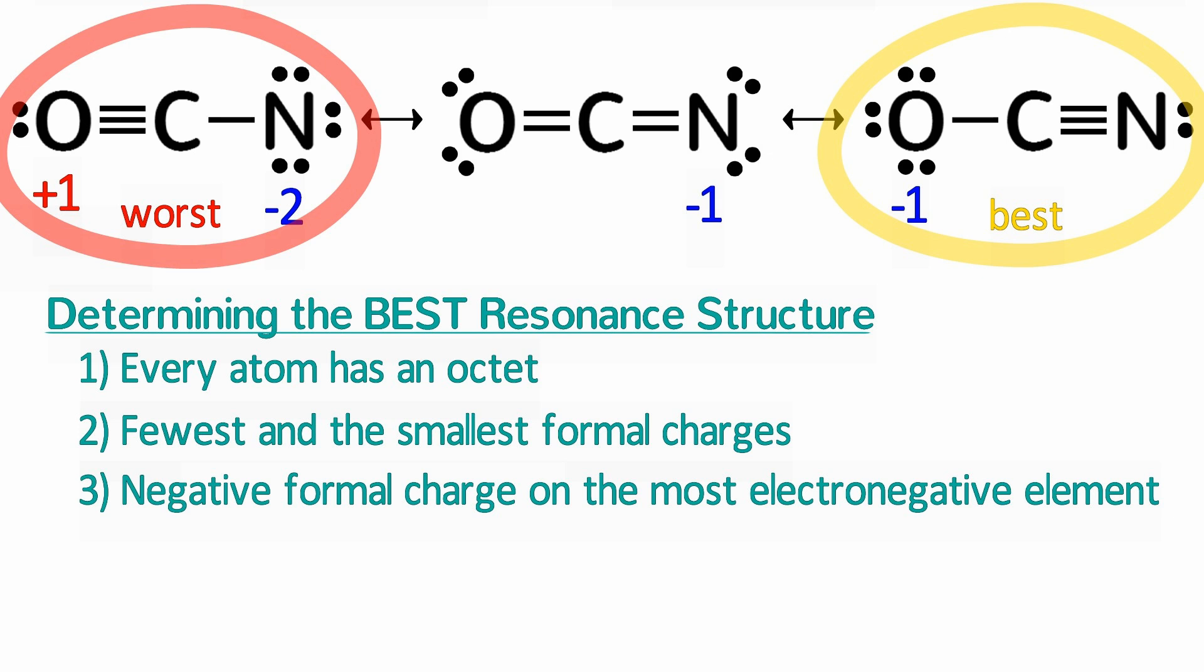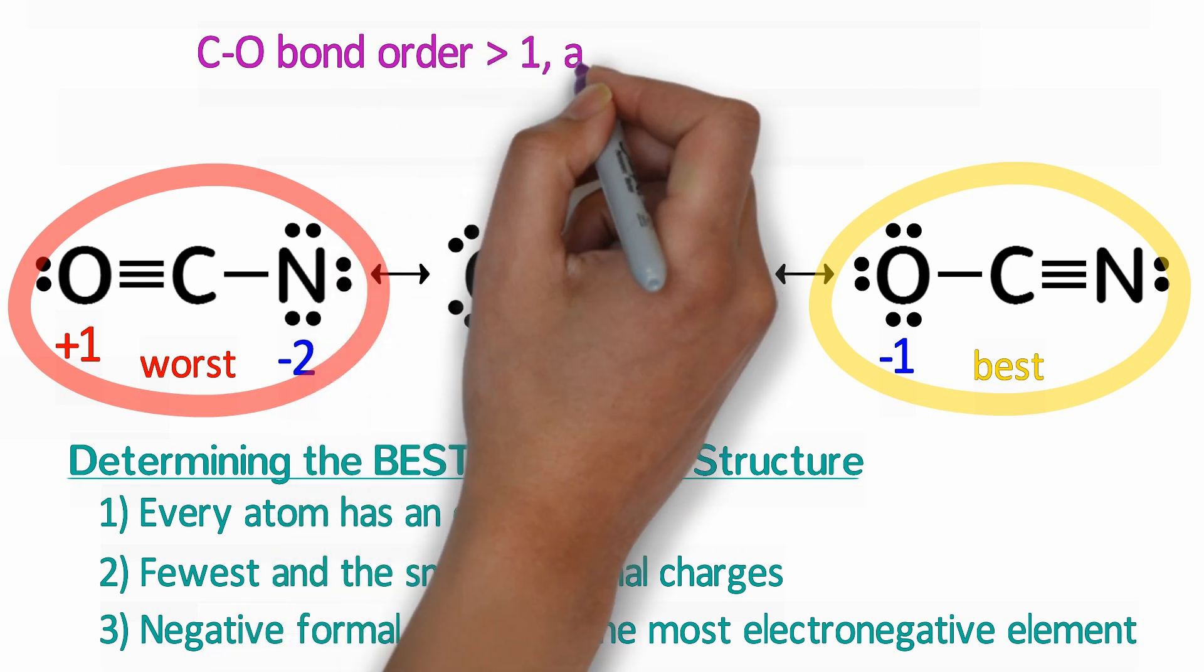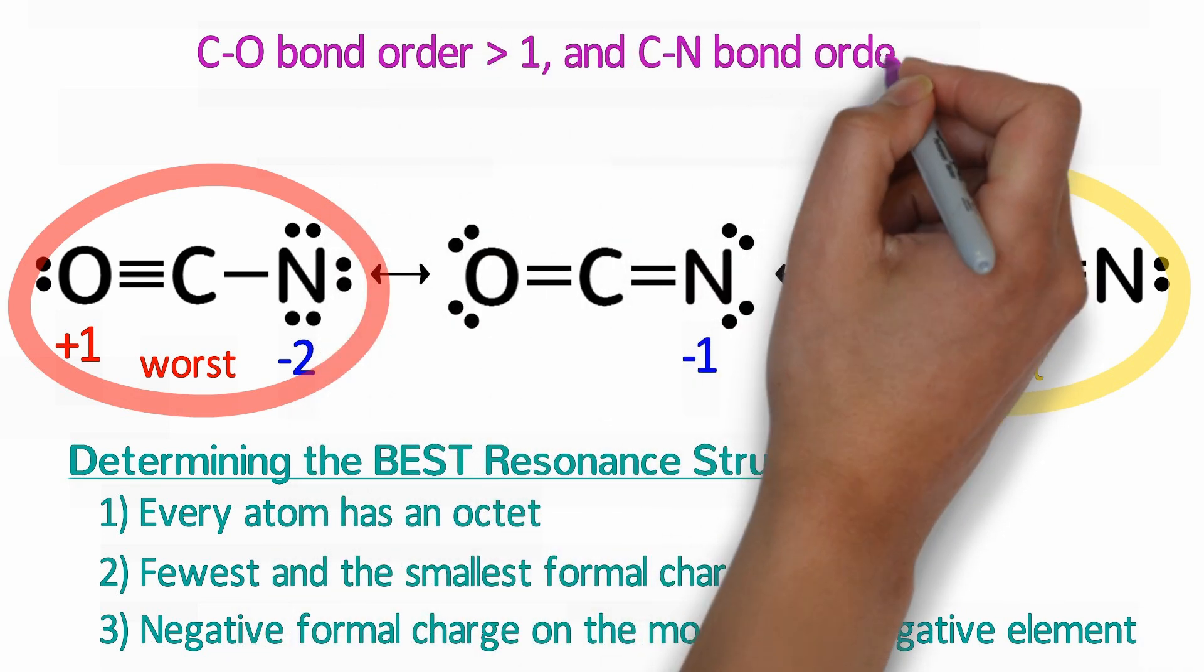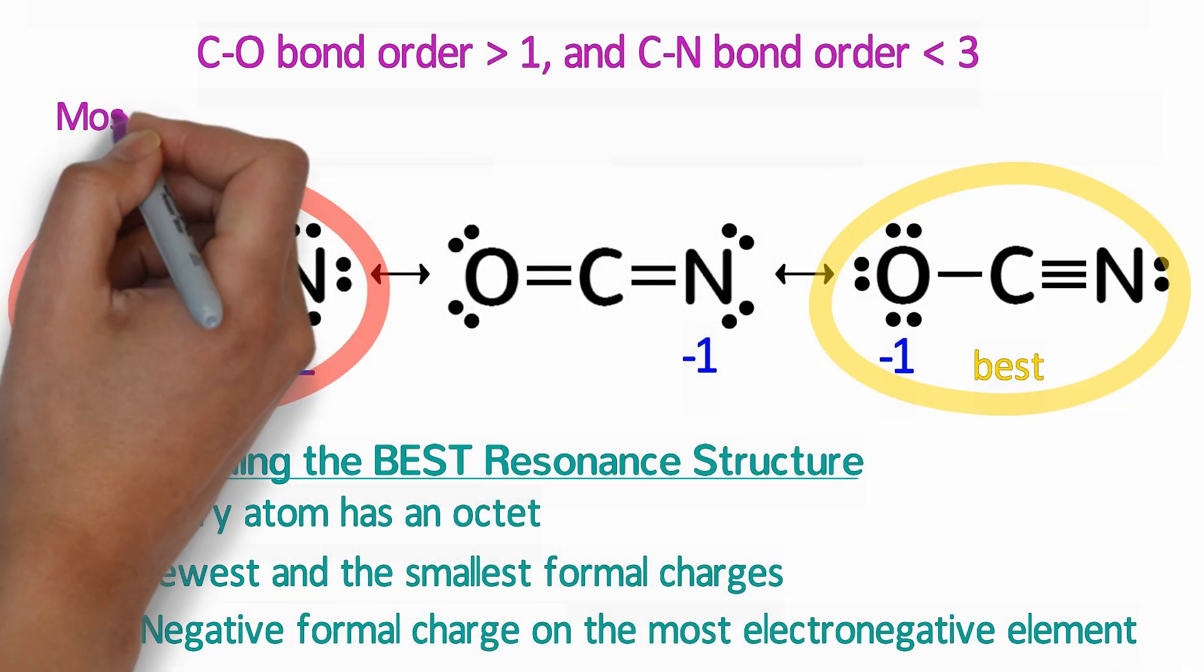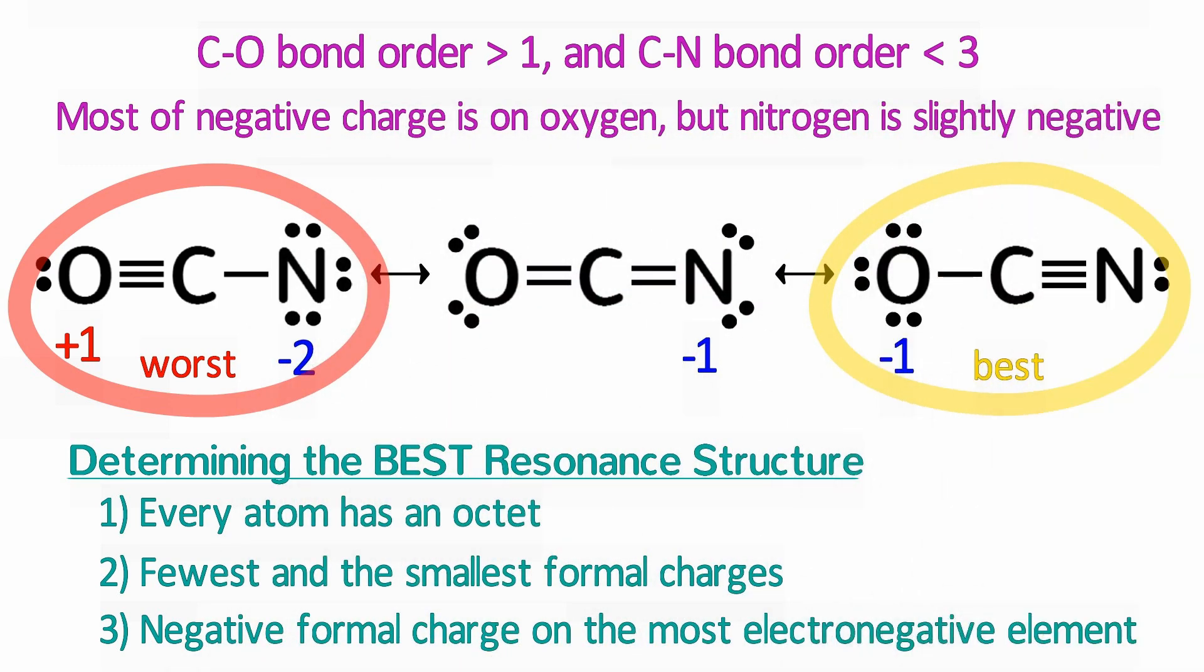In cases like cyanate, where there are multiple unequal resonance structures, it is impossible for us to determine the exact bond order without more sophisticated analysis. We can say that cyanate structure is closest to the best resonance structure, but the other resonance structures will contribute some too. So the CO bond order is a little more than one and the CN bond order is a little less than three. Most of the negative charge is on the oxygen, but the nitrogen has a little bit of negative charge too.